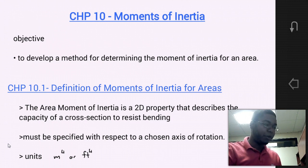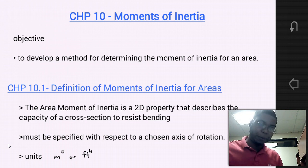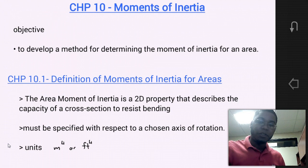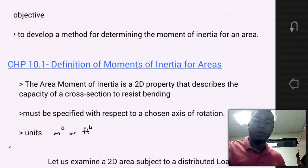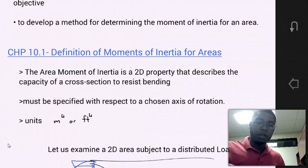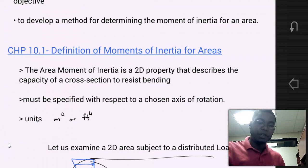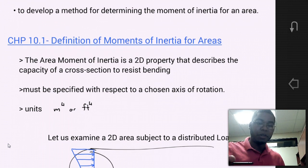Let's get started with Section 10.1, the definition of Moments of Inertia for Areas. The area moment of inertia is a 2D property that describes the capacity of a cross-section to resist bending. It must be specified with respect to a chosen axis about which rotation would occur, and its units are meters to the fourth or feet to the fourth.